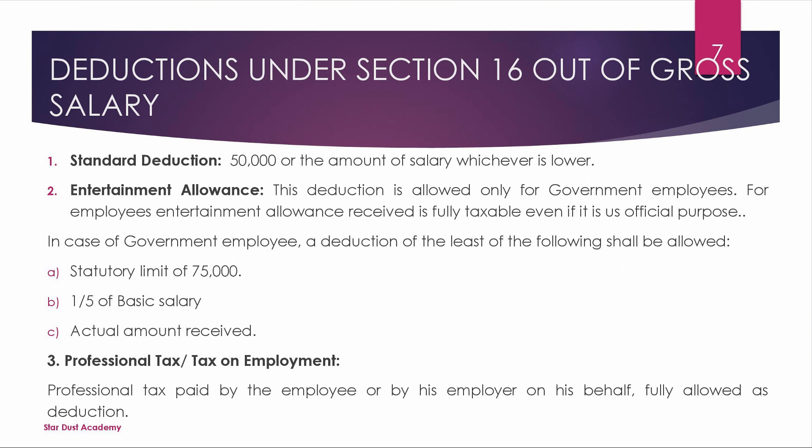Entertainment allowance is applicable and taxable. The least of the following three amounts is the exemption: the statutory limit of 75,000, one-fifth (1/5) of basic salary, and the actual amount received. We take the least amount as exempted. Actual amount received minus exempted amount is taxable.